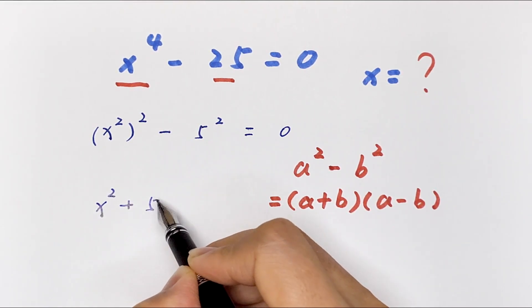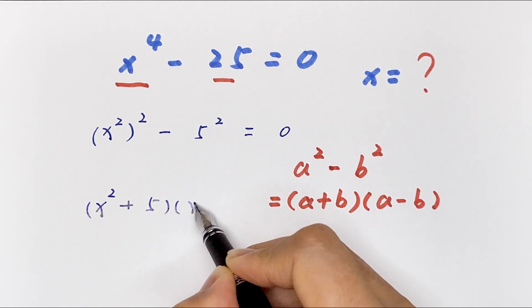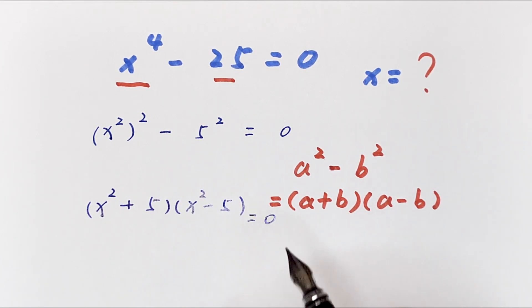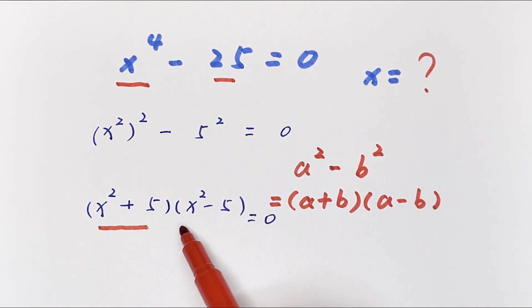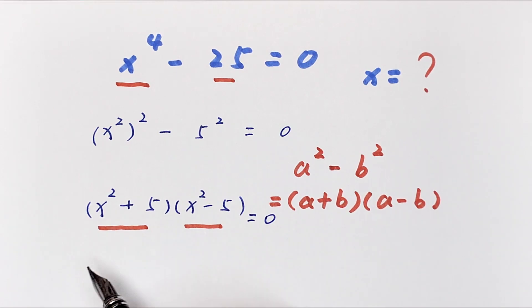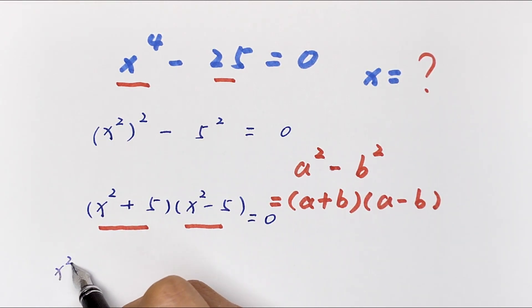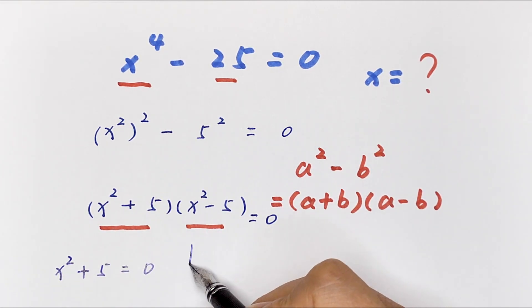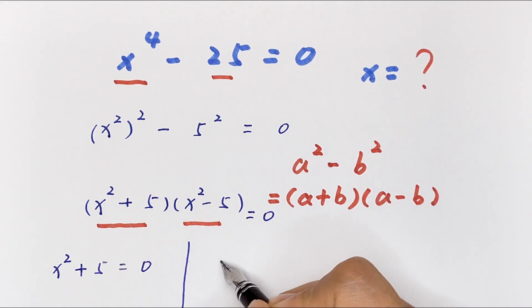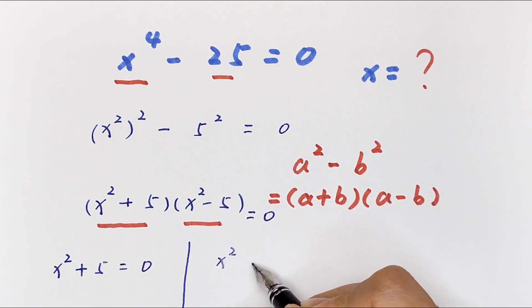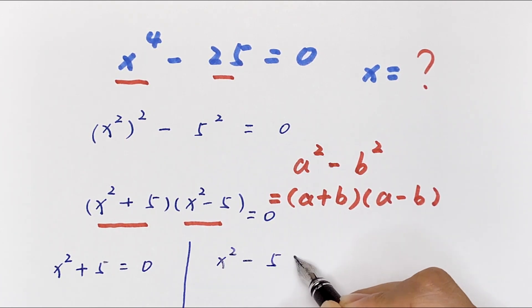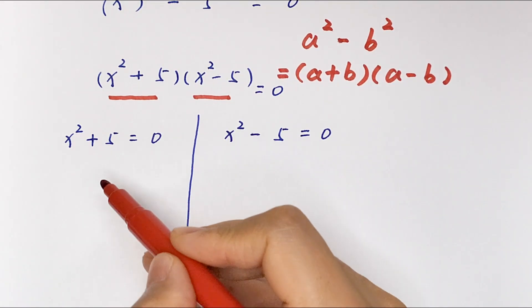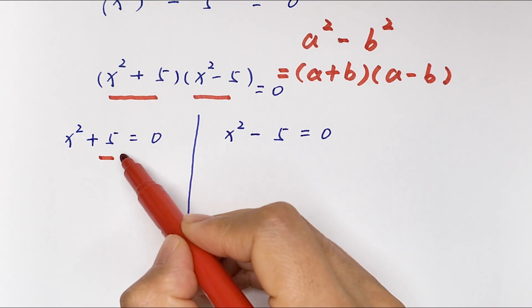So it will be x squared plus 5, bracket times x squared minus 5, is equal to 0. We have two cases: case one, x squared plus 5 is equal to 0, and case two, x squared minus 5 is equal to 0.